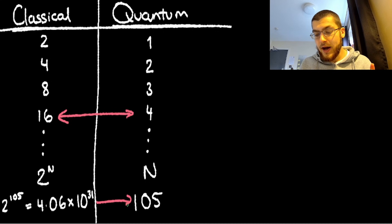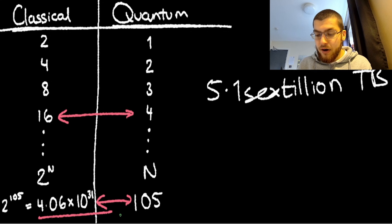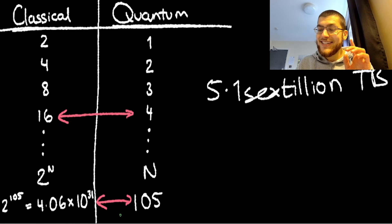But for big numbers like 105, this makes a massive difference. Just 105 qubits can represent approximately 4.06 times 10 to the 31 bits, or around 5.1 sextillion terabytes.